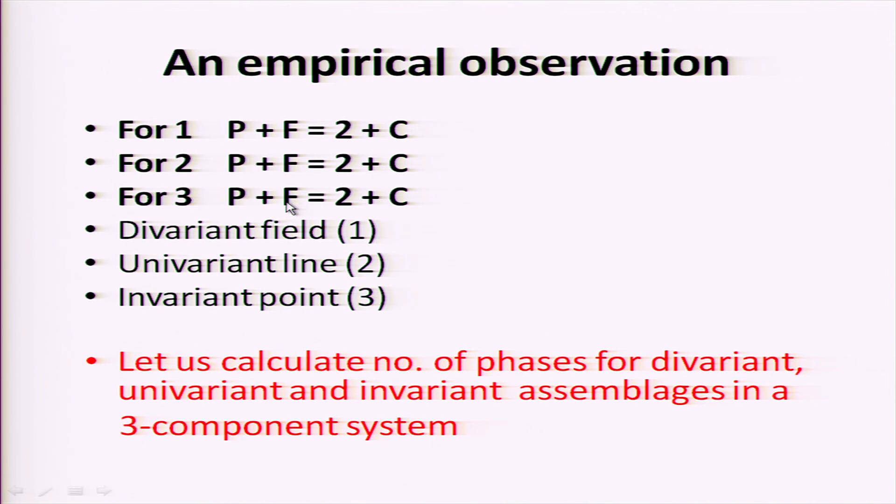Similarly, for an invariant situation where F = 0 in a 3-component system, the number of phases will be 5. Conversely, if we are examining a rock which we can define in terms of 3 components and we find 5 phases together, we can say this rock specifies a specific pressure and temperature. If we find 4 phases, that tells us it specifies a univariant reaction. And if we find 3 phases in a 3-component system, we know the rock represents a range of pressure and temperature.